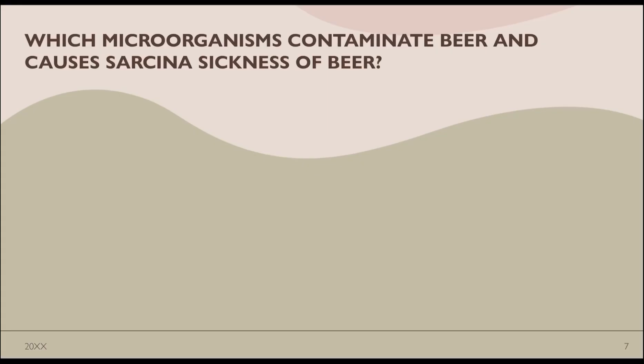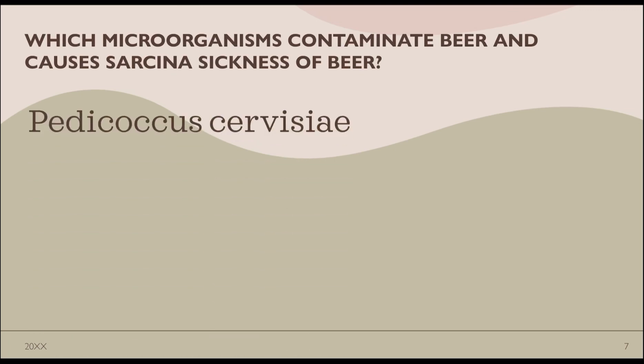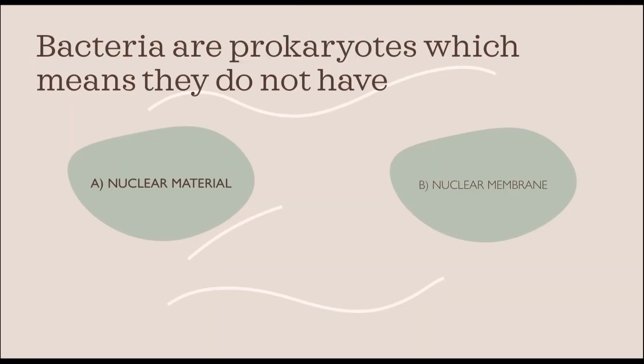The next question is: which microorganism contaminates beer and causes sarcina sickness of the beer? Sarcina sickness means the beer will have high acidity and a buttery aroma. The microorganism responsible is Pediococcus damnosus, which has a fermentative physiology that leads to the production of lactic acid from sugar.